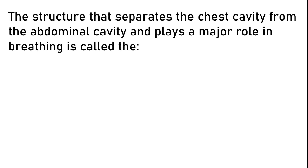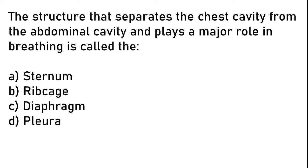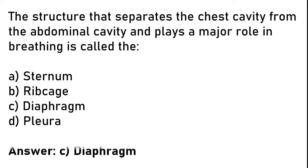The structure that separates the chest cavity from the abdominal cavity and plays a major role in breathing is called: (A) sternum, (B) ribcage, (C) diaphragm, (D) pleura. The correct answer is option C: diaphragm.